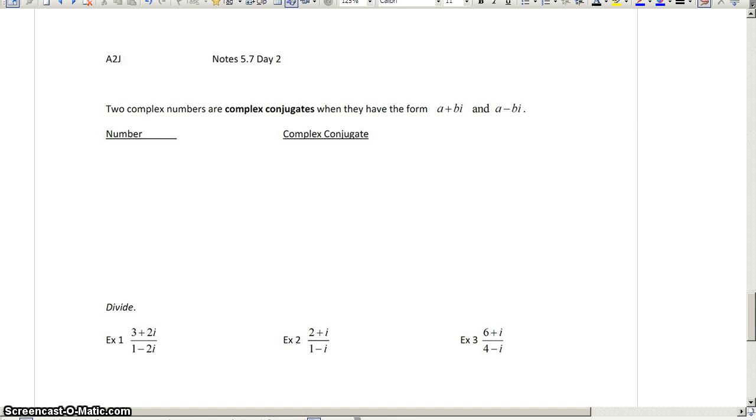Day 2 of 5.7 deals with the division of complex numbers. Now remember that an imaginary number i, as we can see it in its form sometimes, like a bi, really is a square root of negative 1.